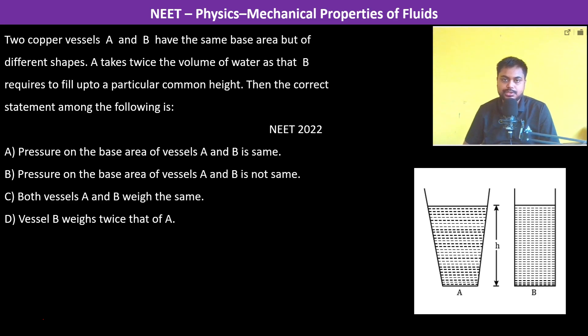Two copper vessels A and B have the same base area but of different shapes. A takes twice the volume of water as that B requires to fill up to a particular common height. Correct statement.